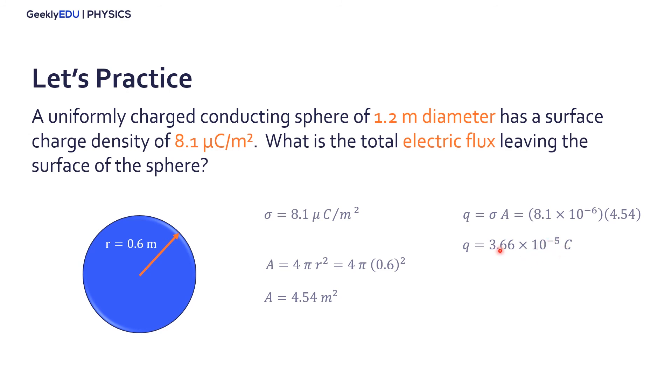Now we can simply apply the Gauss laws. We have the electric flux, is the charge divided by the permittivity of free space. We have already the charge, the permittivity of free space is 8.85 times 10 to the negative 12, so we get an electric flux of 4.14 times 10 to the 6 newtons meters squared per coulomb.